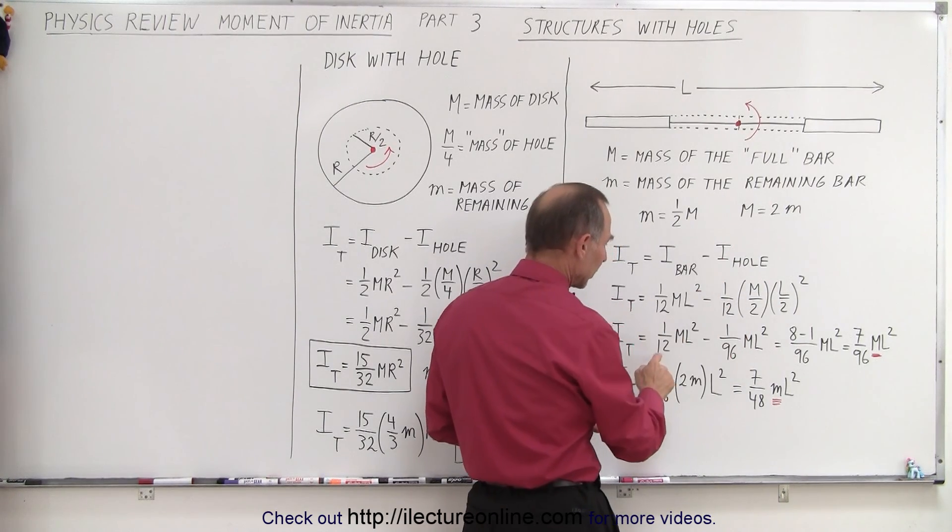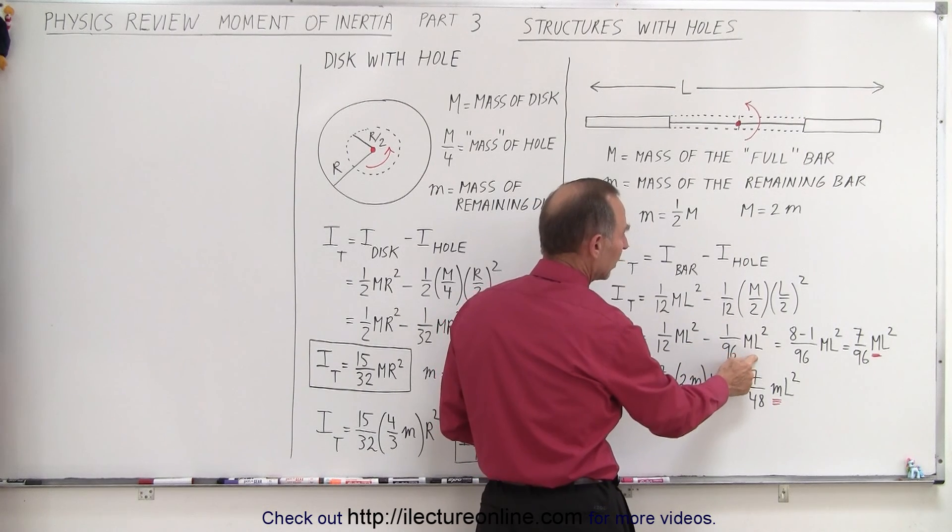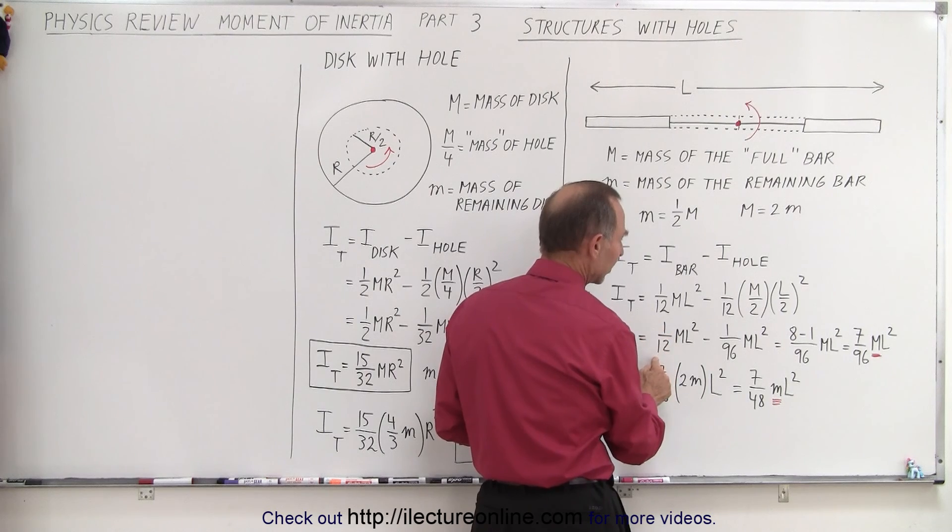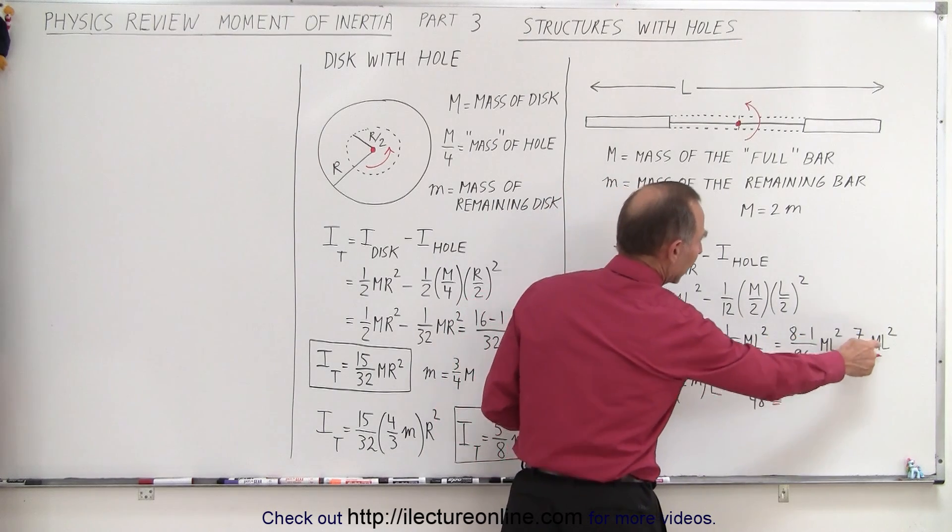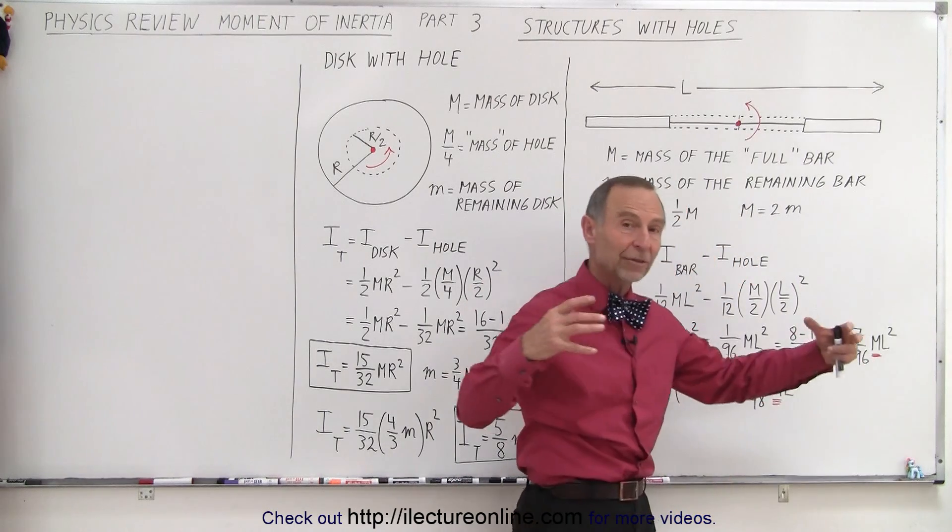When we work that out, we end up with 1/12 ML squared minus 1/96 ML squared. Then, of course, if you put this in a common denominator, you get 8/96. 8 minus 1 is 7/96 ML squared, where M, the big M, is the mass of the whole bar.